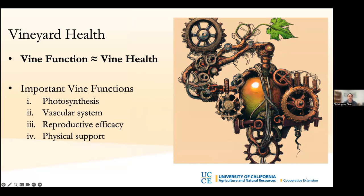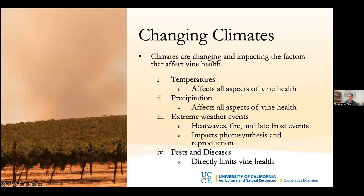Vine health directly impacts the vineyard's function and key components of vine physiology. The main components we're concerned with are photosynthesis — which provides carbohydrates through converting sunlight into sugars — vascular system function, which is the highway for water and nutrients, reproductive efficacy leading to good yields and high quality fruit, and physical support provided through trellising and training. Vineyard health is also subject to environmental changes, and our changing climates are affecting those physiological factors that impact vine health.